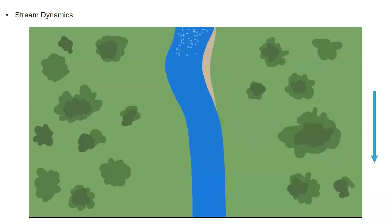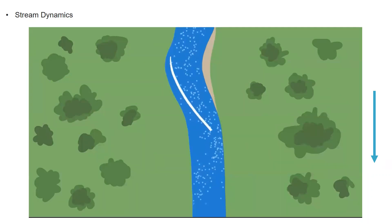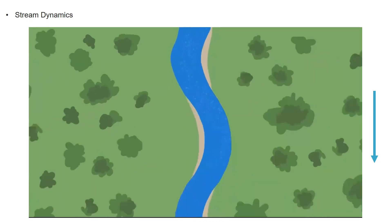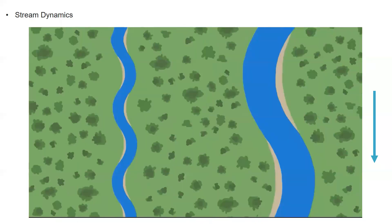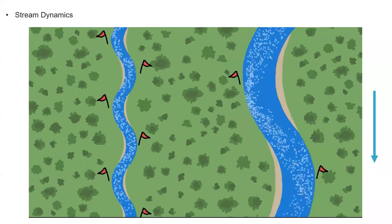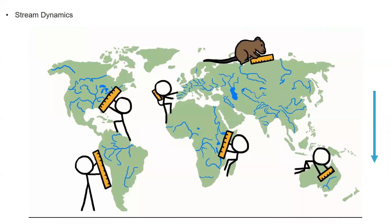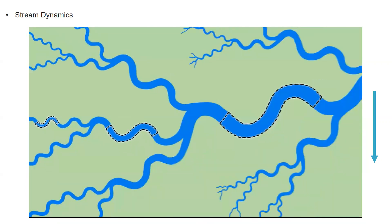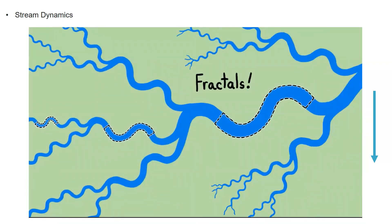Meanwhile, the fast-moving water near the outside bank sweeps out of the curve with enough momentum to carry it across the channel and slam it into the other side, where it starts to carve another curve, and then another, and then another. The wider the stream, the longer it takes the slingshotting current to reach the other side, and the greater the downstream distance to the next curve. Measurements of meandering streams all over the world reveal a strikingly regular pattern: the length of one S-shaped meander tends to be about six times the width of the channel. So little tiny meandering streams tend to look just like miniature versions of their bigger relatives.